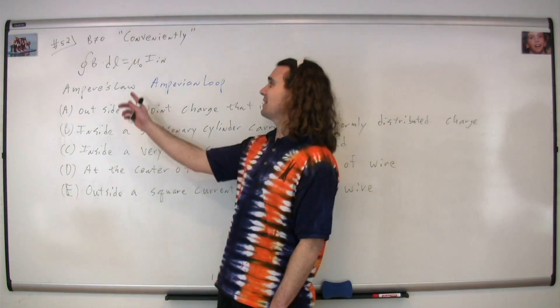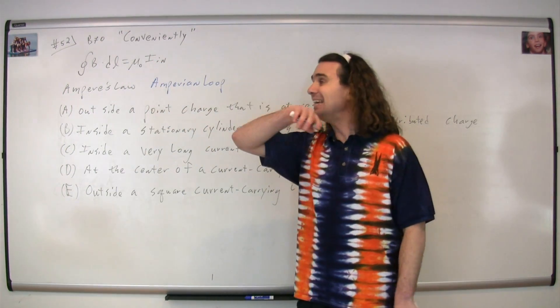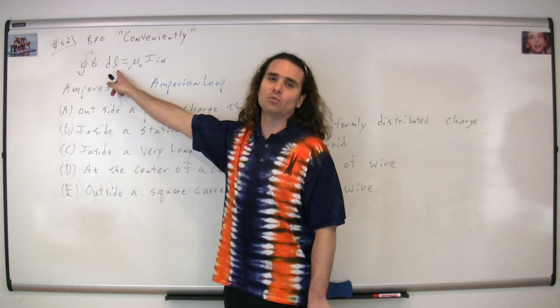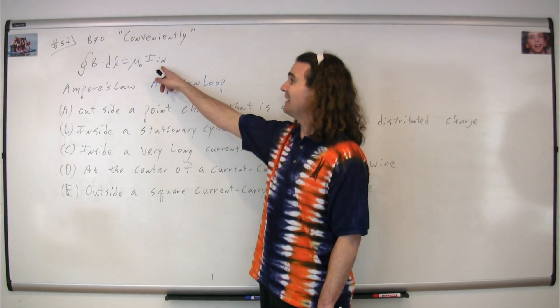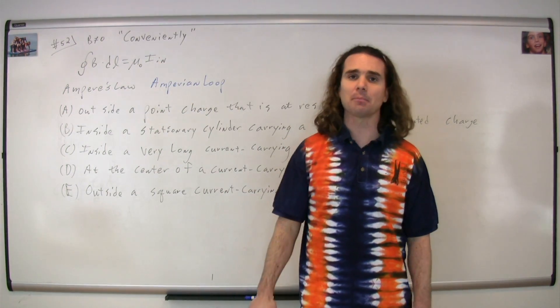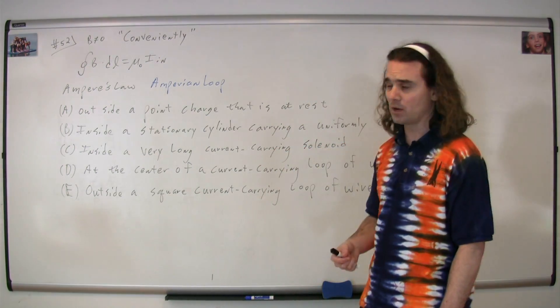The closed loop integral of B dot DL equals mu knot I in. This is the magnetic field, DL would be the length of the Ampere loop, and I inside would be the current inside the Ampere loop. But again, that word conveniently is an important one.